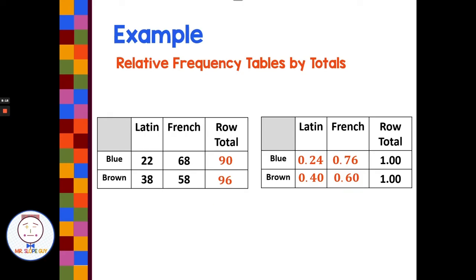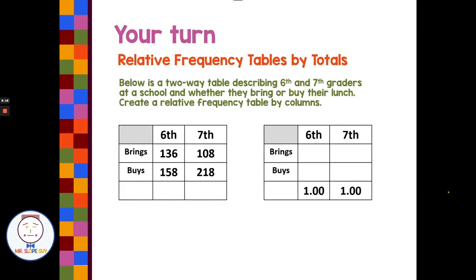So I think you guys are ready to try one of these on your own. Below is a two-way table describing sixth and seventh graders at a school and whether they bring or buy their lunch. Create a relative frequency table by columns. All right, pause the video here and you guys make the relative frequency table and come back, check and see how you did it.